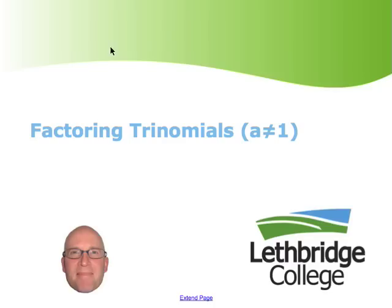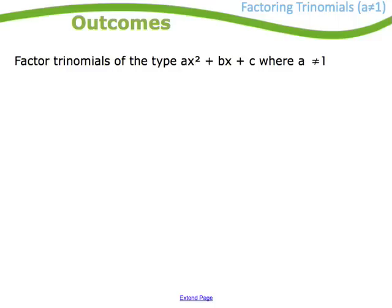Now let's turn our attention to looking at factoring trinomials where the first term has a coefficient other than 1. So we'll be factoring things like 3x squared plus something or other. It's that 3 that causes us a bit of grief, a bit of work.